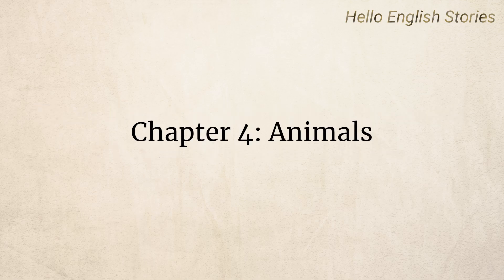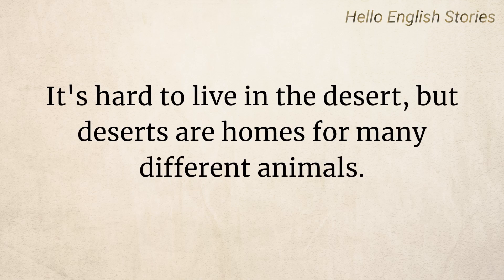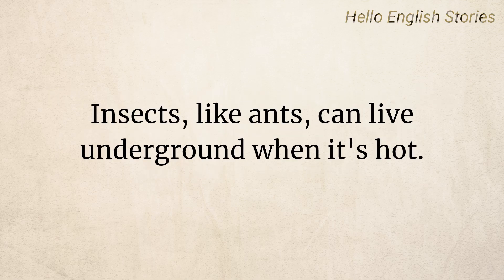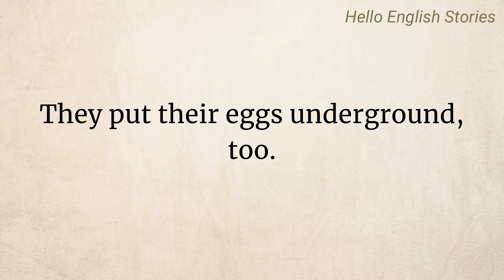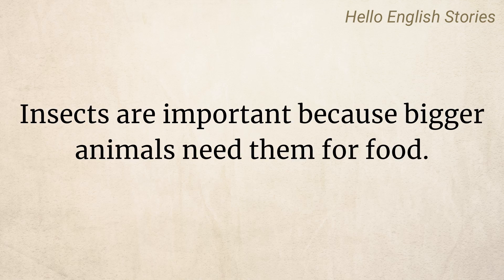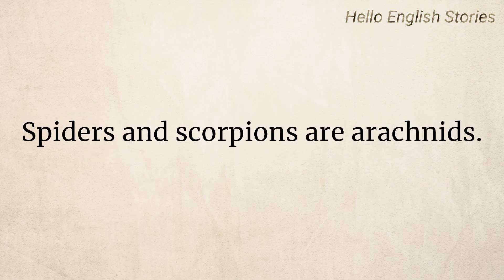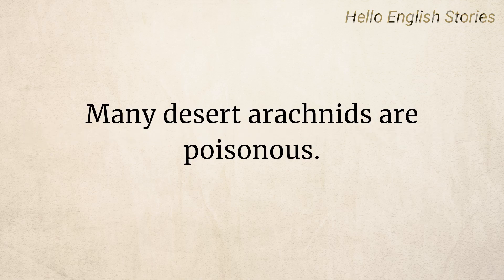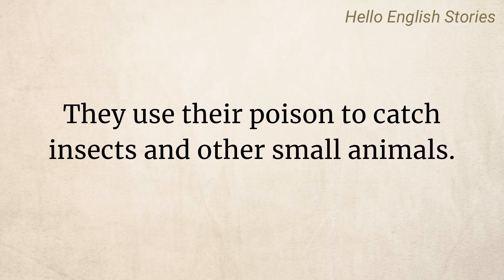Chapter 4: The Animals. It's hard to live in the desert, but deserts are homes for many different animals. Insects, like ants, can live underground when it's hot. They put their eggs underground too. Insects are important because bigger animals need them for food. Spiders and scorpions are arachnids. Many desert arachnids are poisonous. They use their poison to catch insects and other small animals.